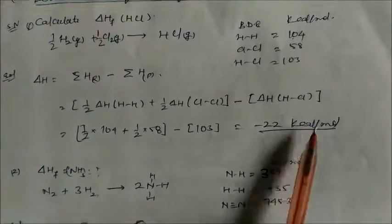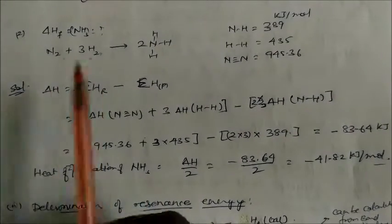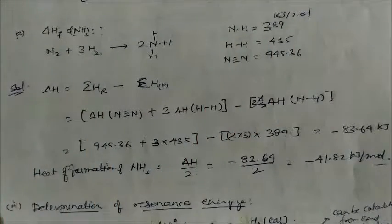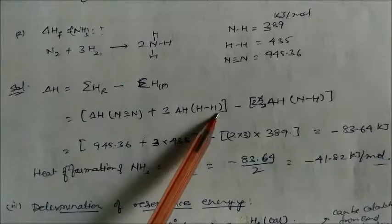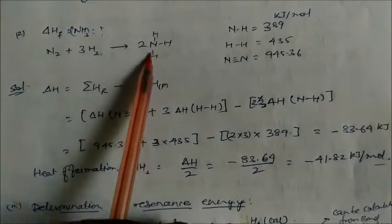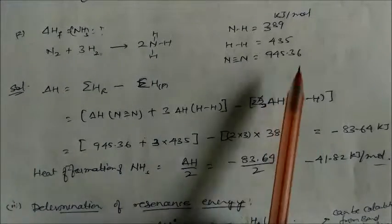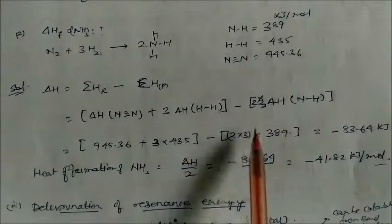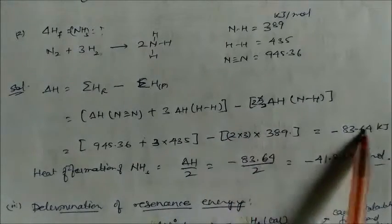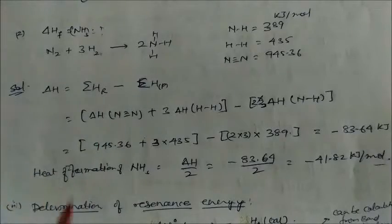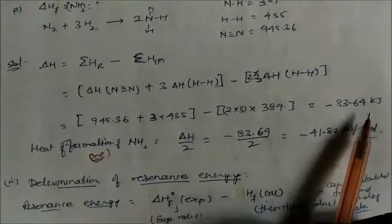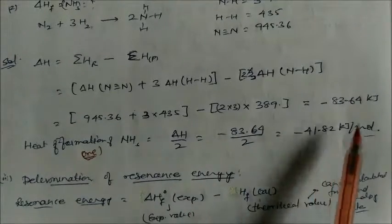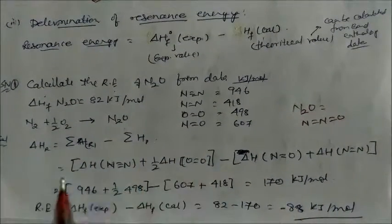For heat of formation of ammonia: N₂ + 3H₂ → 2NH₃. ΔH = bond enthalpy of reactants − bond enthalpy of products. Reactants: N≡N bond + 3 × H–H bonds. Product: 2 × 3 = 6 N–H bonds (6 × ΔH N–H). Substituting given values and solving gives total enthalpy for two NH₃ molecules. For heat of formation of one molecule of NH₃, divide the total value by 2.